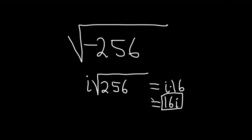However, a better way to do this would be as follows. Whenever you see the negative in the square root, you know there's going to be an i there. And then the square root of 256 is 16.